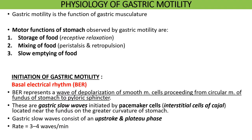Now let us first understand the physiology of gastric motility. Gastric motility is the function of gastric musculature — the muscles of the stomach — which consists of three layers of smooth muscle fibers: an outer longitudinal layer, a middle circular layer and an inner oblique layer. The motor functions served by gastric motility are storage of food by the process of receptive relaxation, mixing of food by peristalsis and retropulsion, and gastric emptying.